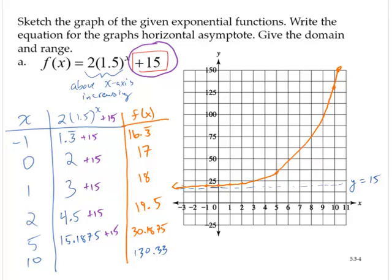We're asked to write the equation for the graph's horizontal asymptote. I did that. That's y equals 15. That's the horizontal asymptote. And give the domain and range.